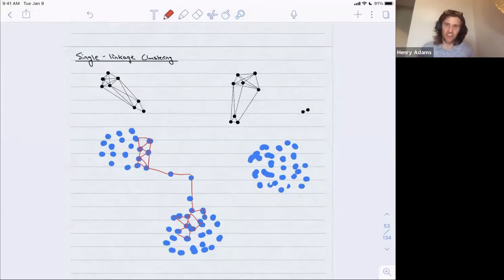Bringing this down from, instead of three clusters, you might only measure two clusters. Okay, so this is the chaining problem.